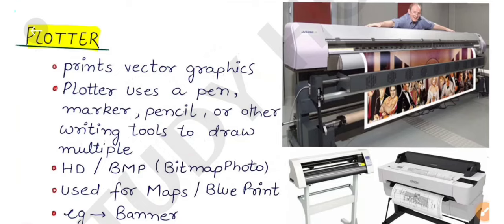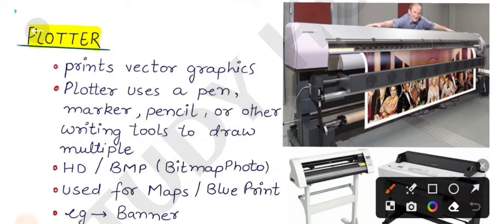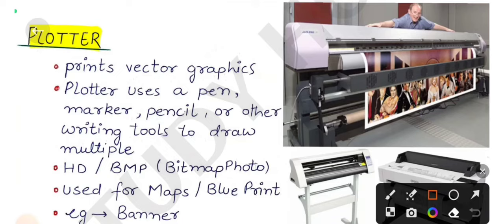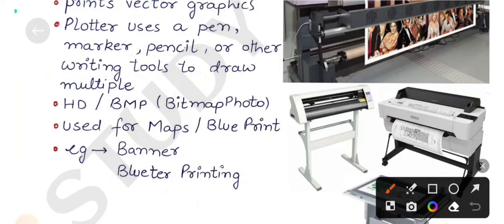If we talk about the plotters, they are like printers who are doing big banners and advertisements. What do plotters do? Prints vector graphics. After that, plotter uses a pen, marker, pencil and other writing tools to draw multiple continuous lines on paper. Plotters use all these devices for printing. Plotters print in HD, HD is high definition. If we look at the proper term, then we use BMP. BMP is bitmap photo and used for maps and blueprints.